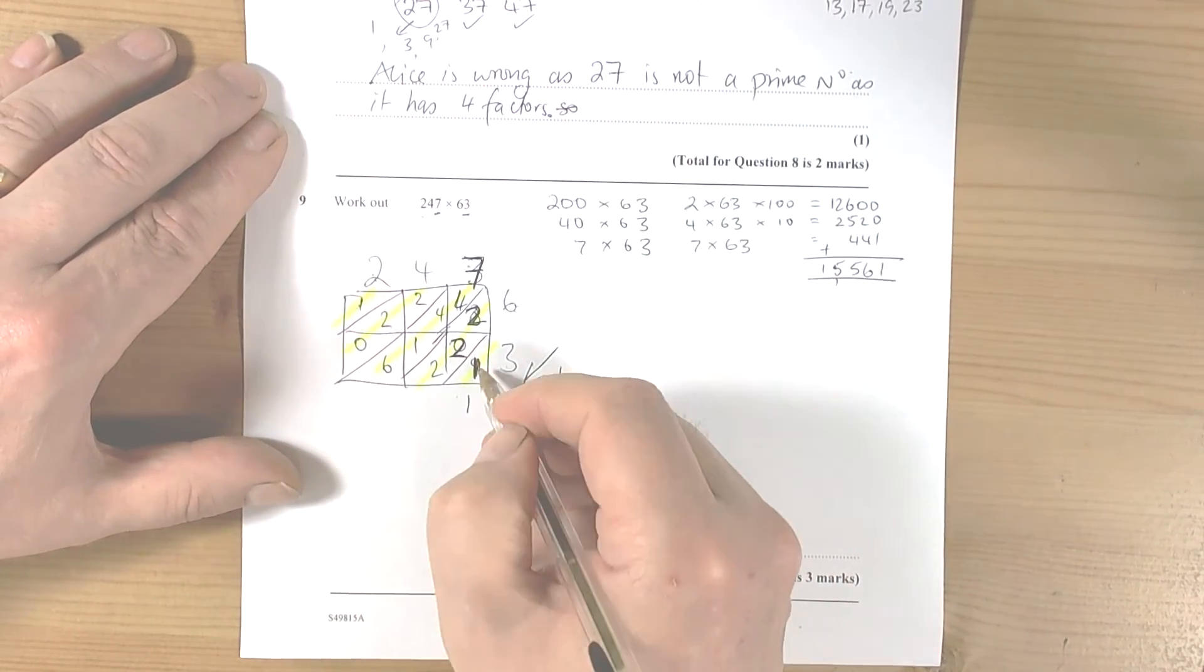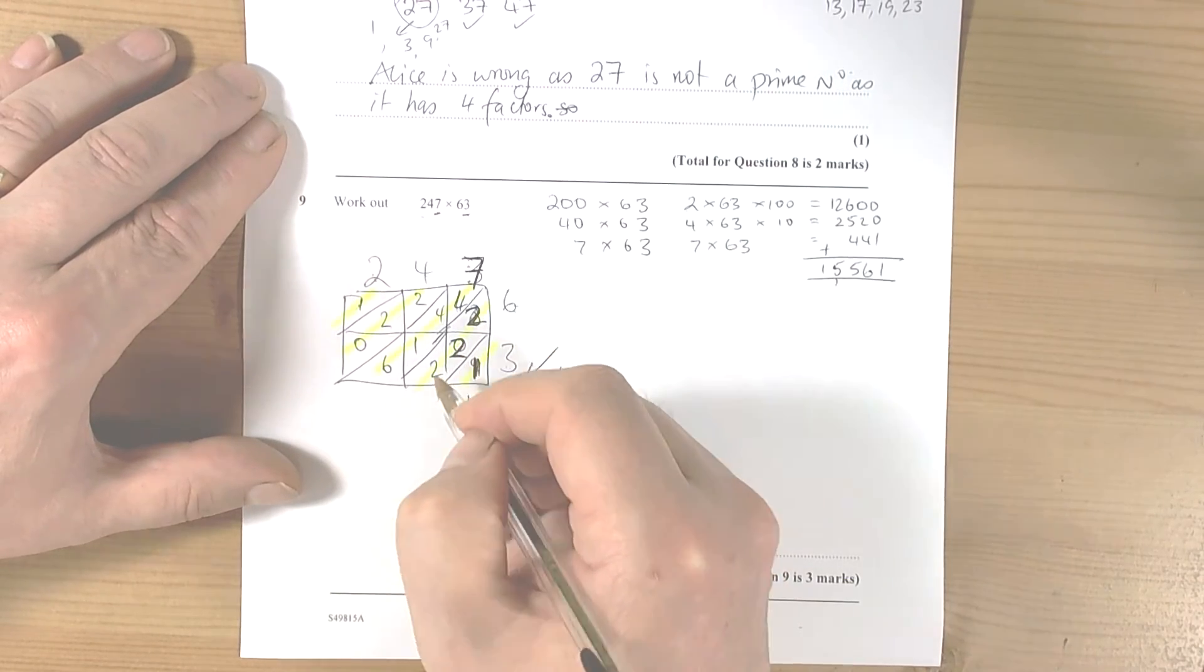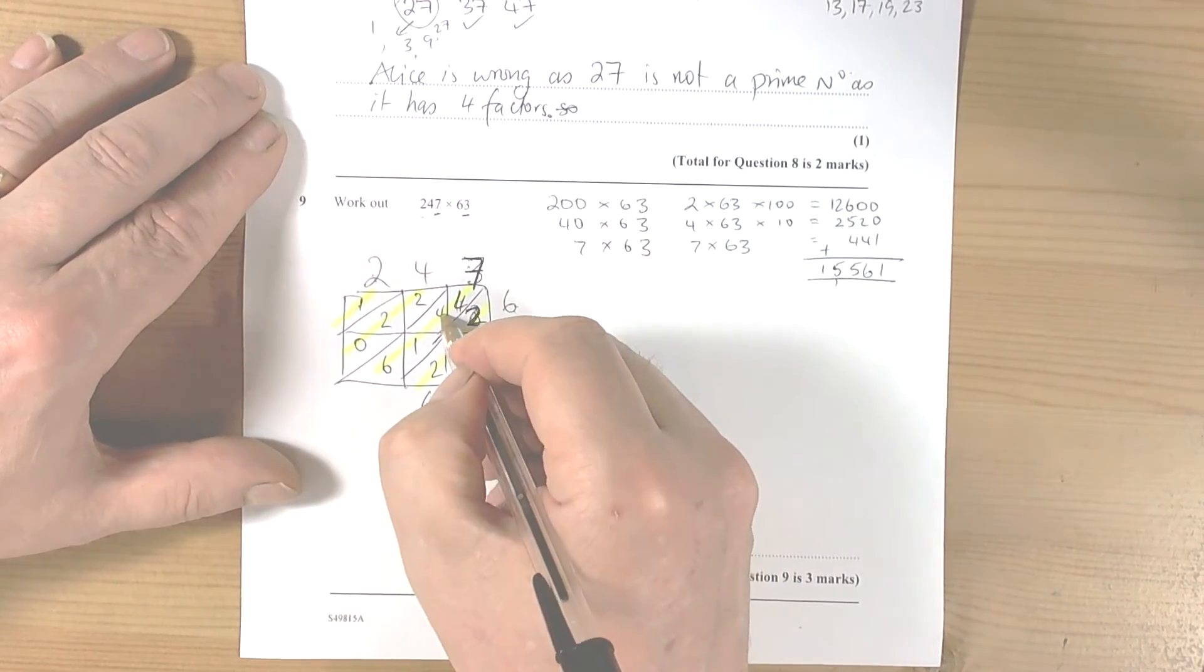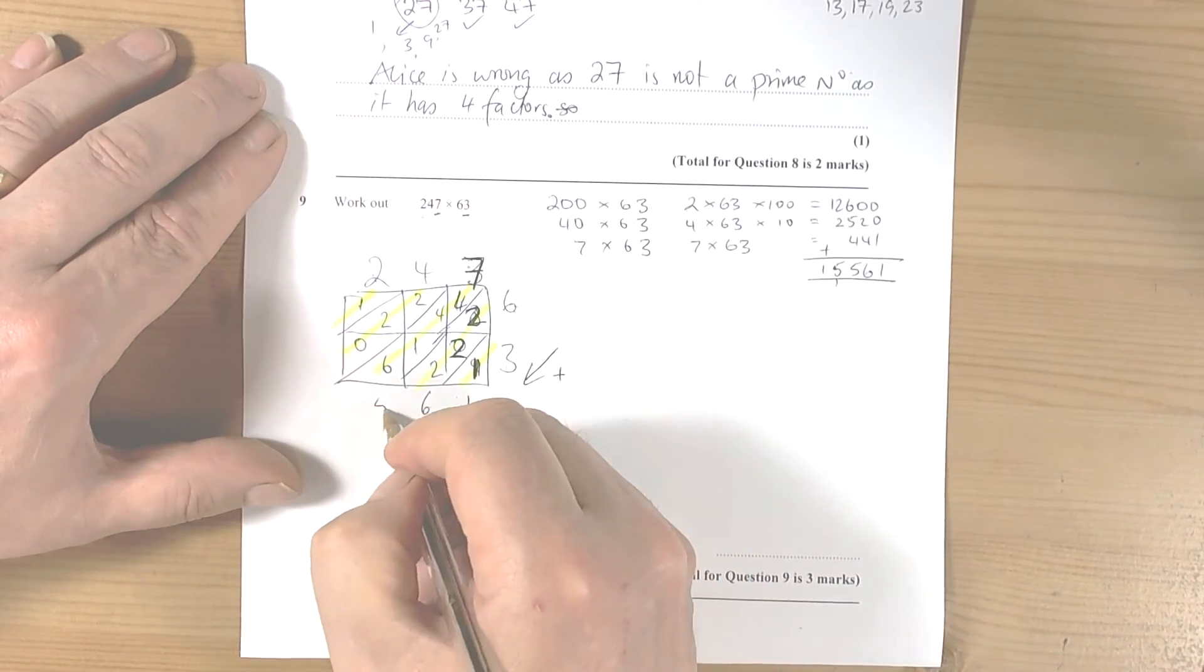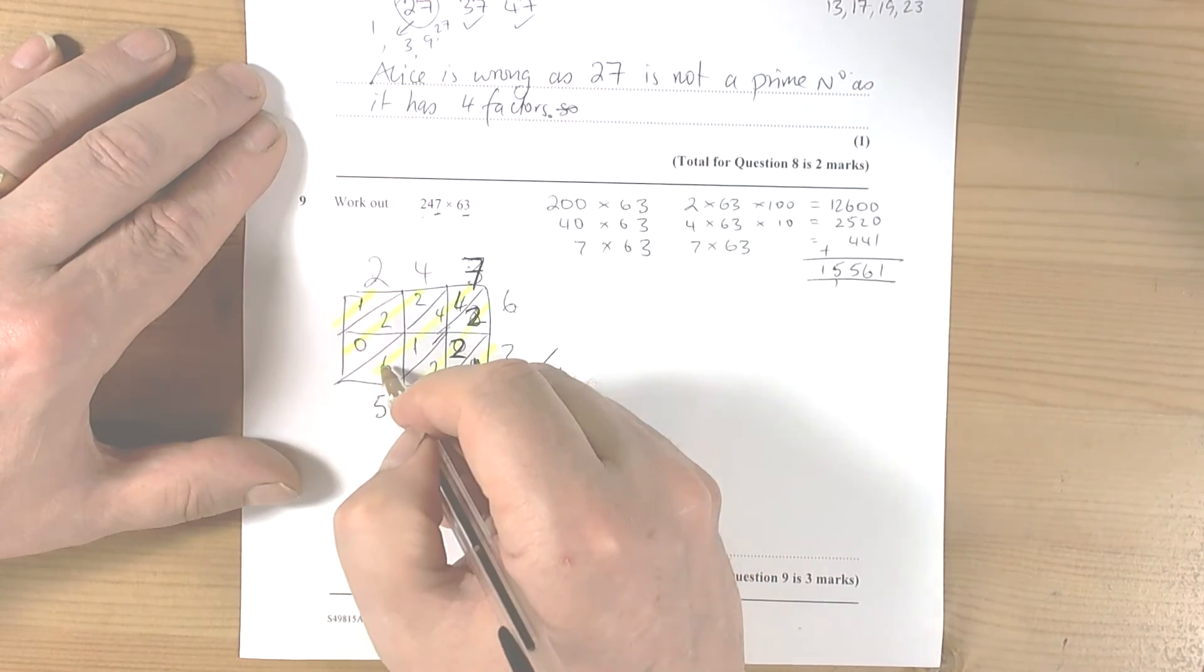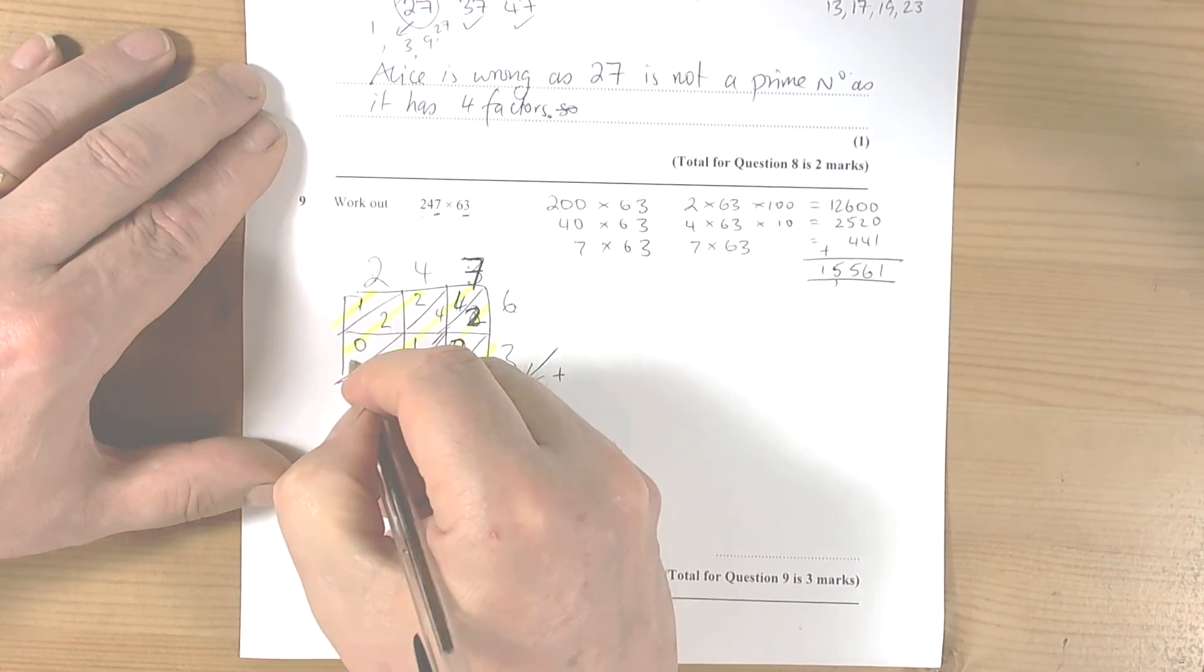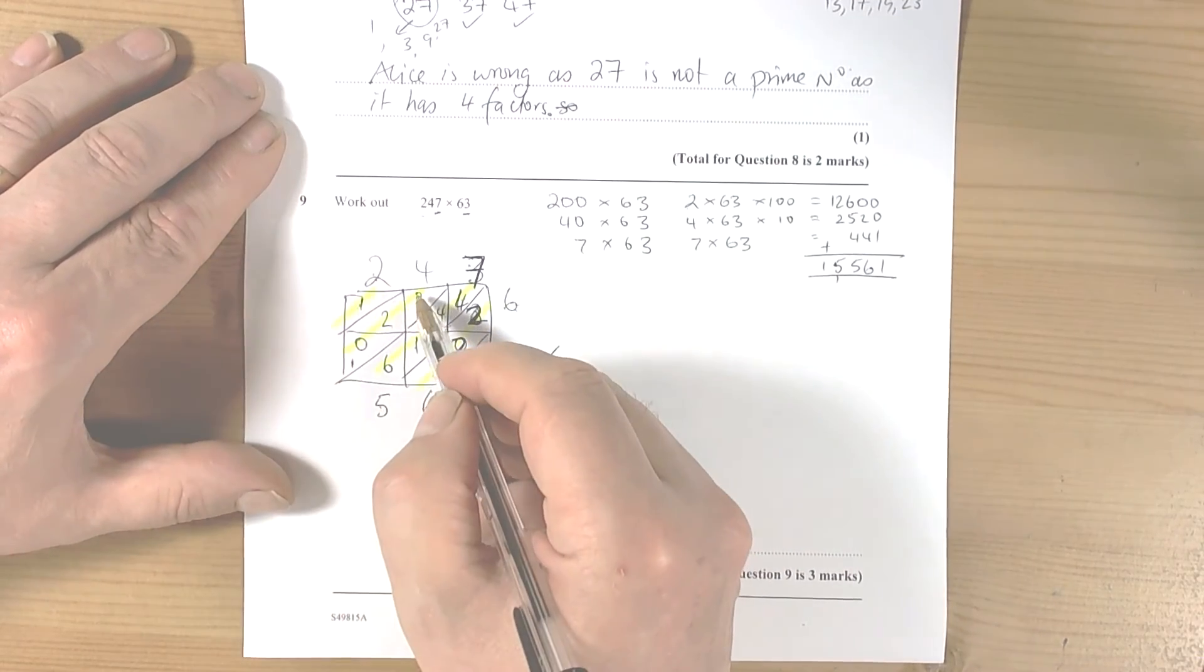So we add up diagonally, so we've got a 1 there. 2 and 2 and 2 and 2 makes 6. 4 and 4 is 8, plus the 1 is 9, plus the 6 is 15. So that's 4, 8, 9, 15. So 5 goes down and the 1 carries over to the next diagonal.